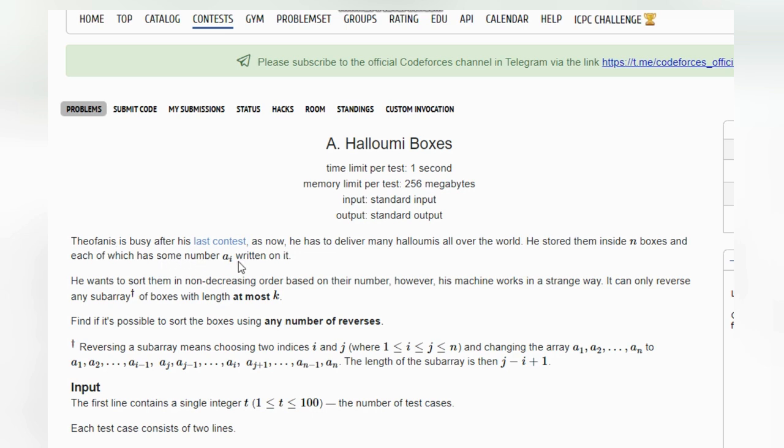Each box has some number ai written on it. He wants to sort them in non-decreasing order based on their number. However, his machine works in a strange way - it can only reverse any subarray of boxes with length at most k. Find if it's possible to sort the boxes using any number of reverses.